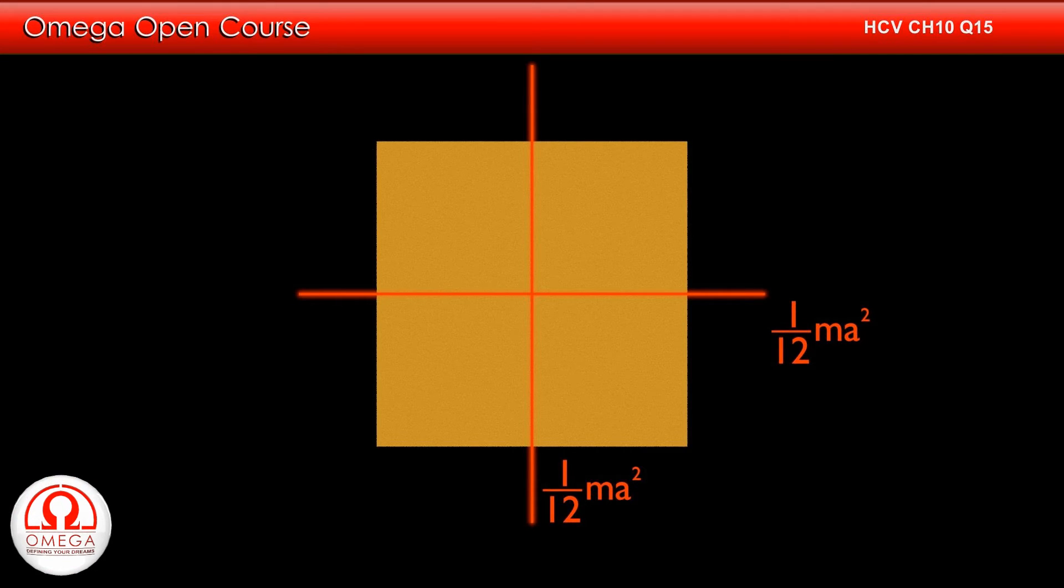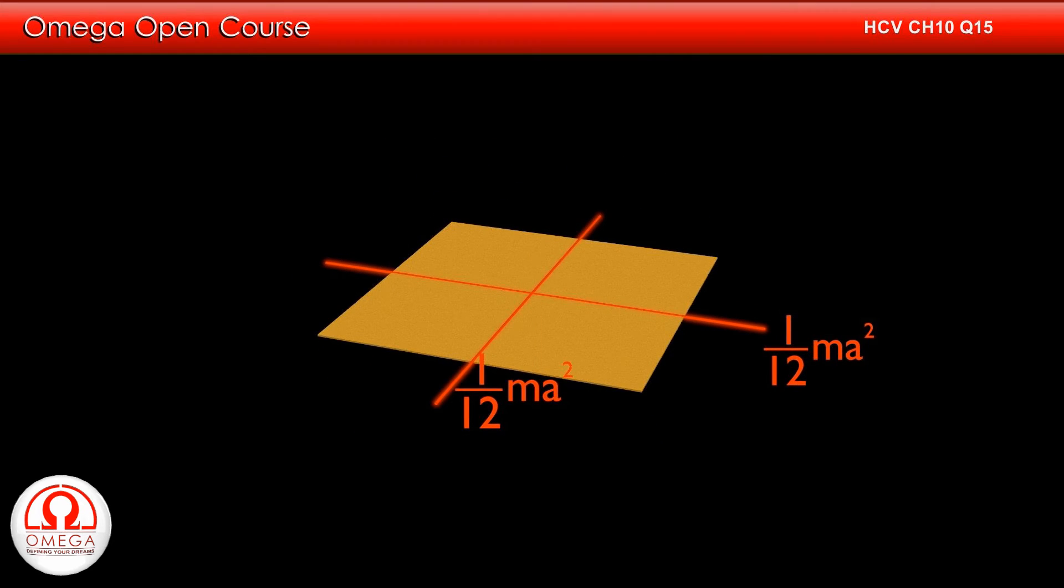Now we take an axis passing through point of intersection of these two axes and perpendicular to the plane of the square. Then as per perpendicular axis theorem, moment of inertia about this axis is given by sum of moment of inertia about the other two axes. Thus moment of inertia about this axis is 1 by 6 ma square.